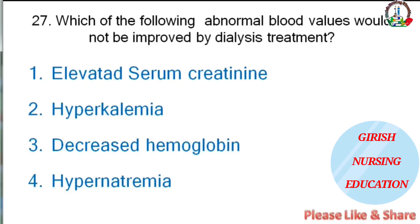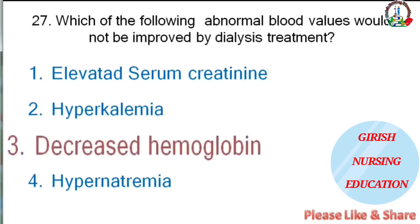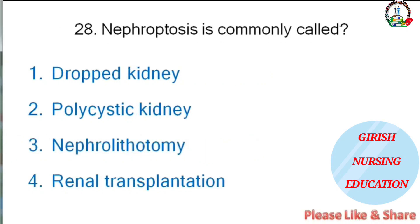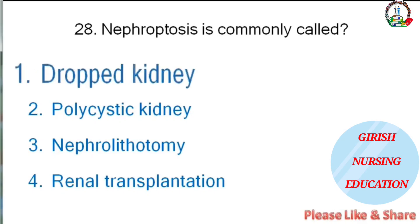Which abnormal blood value would not be improved by dialysis — elevated serum creatinine, hyperkalemia, decreased hemoglobin, or hypernatremia? The correct answer is decreased hemoglobin. Nephroptosis is commonly called — dropped kidney, polycystic kidney, nephrolithotomy, or renal transplantation? The correct answer is dropped kidney.